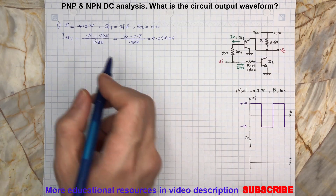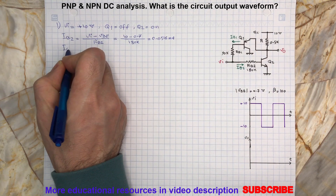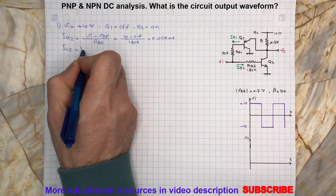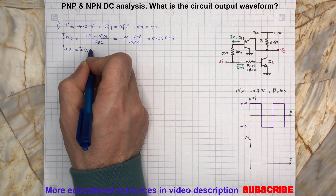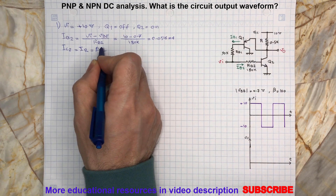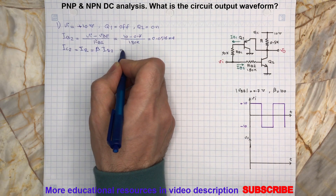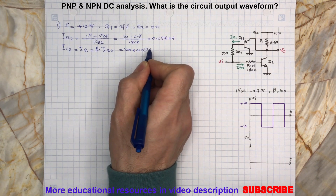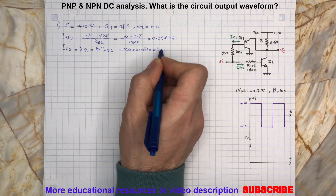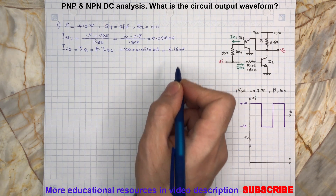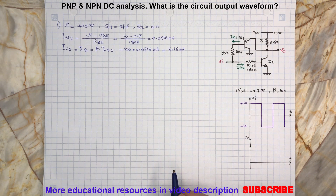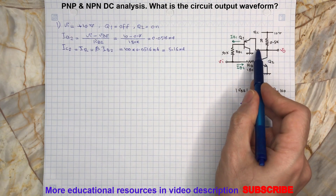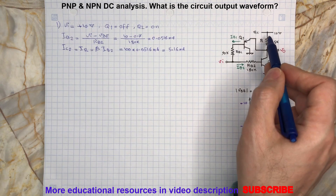So we can write the collector current. With a close look at the circuit, we can see that the collector current also passes through resistor R. Remember, in this case there is no current flowing through the emitter of Q1 — no current here — and the collector current also passes through R.